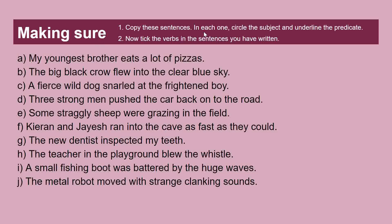Copy these sentences. In each one, circle the subject and underline the predicate. For example: 'My youngest brother eats a lot of pizzas' — 'my youngest brother' is the subject with a circle around it, and 'eats a lot of pizzas' is the predicate which is underlined. You'll notice a pattern emerge. Sentence B: 'The big black crow flew into the clear blue sky.' What is the subject?